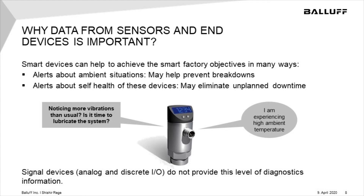Most of these sensors and end devices already have this intelligence built in — it's been there for a while. Most devices have microchips or some level of computing power and are capable of collecting and understanding their ambient systems as well as themselves. Unfortunately, the methods we were using to integrate these devices — signal communication — are incapable or limited in the information they can provide. Technologies like Namur or OSSD systems attempt to get this information out, but are limited by bandwidth or communication capability.